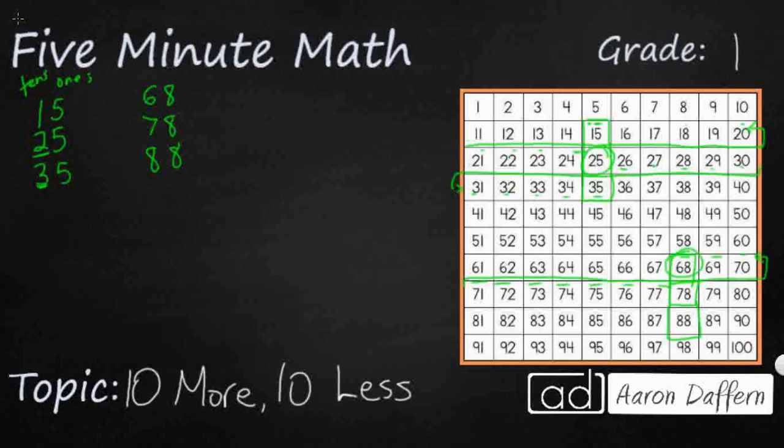Let's count forward. 1, 2. Let's go down a row. 3, 4, 5, 6, 7, 8, 9, 10.